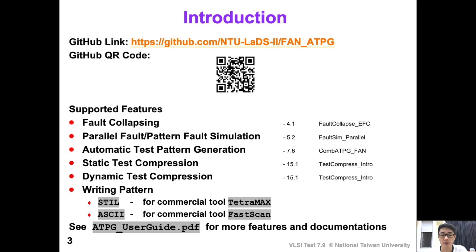Here I am going to give a brief introduction. Below is the GitHub link and the QR code. FAN ATPG supports fault collapsing for reducing runtime. This tool also supports parallel fault simulation and parallel pattern fault simulation, and of course ATPG. Furthermore, we support static test compression and dynamic test compression, both for compressing the test patterns. You can refer to the annotation following the features to find the lecture video by Professor James Qianmo Li.